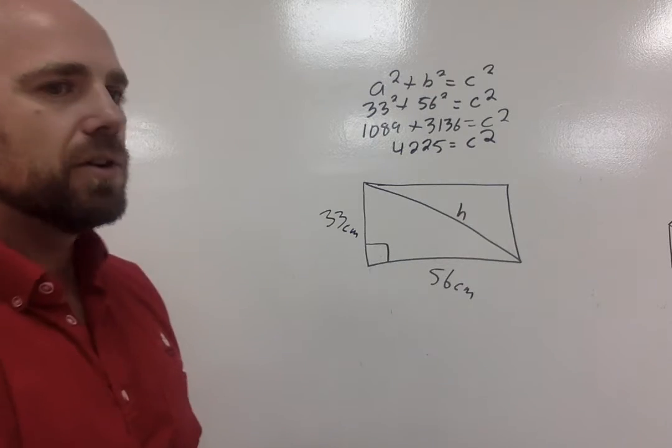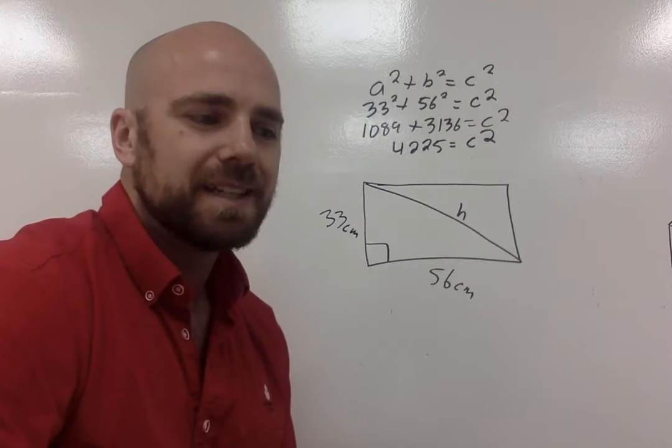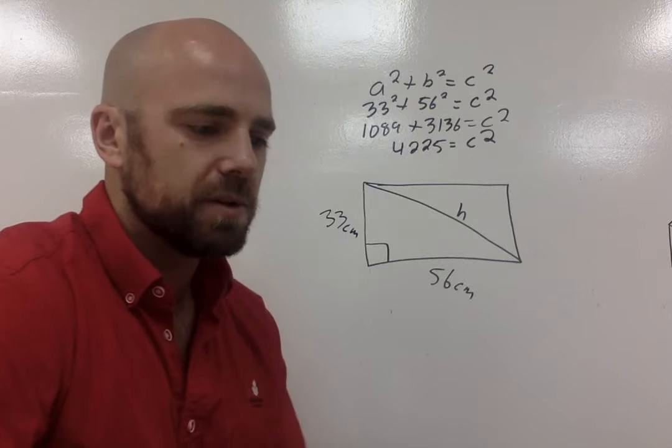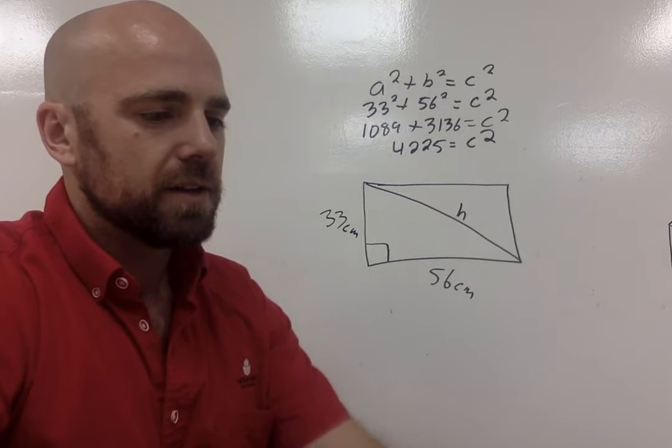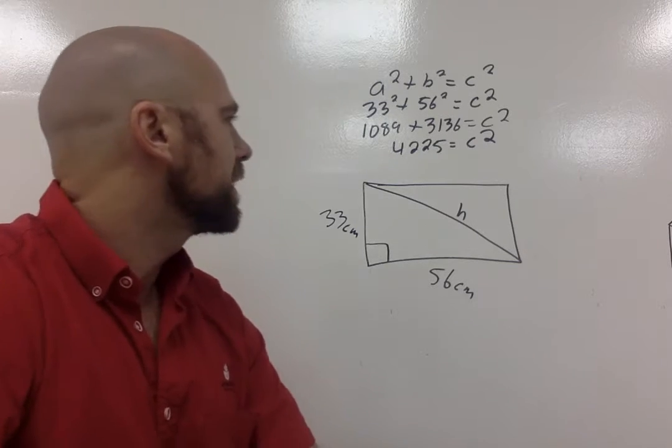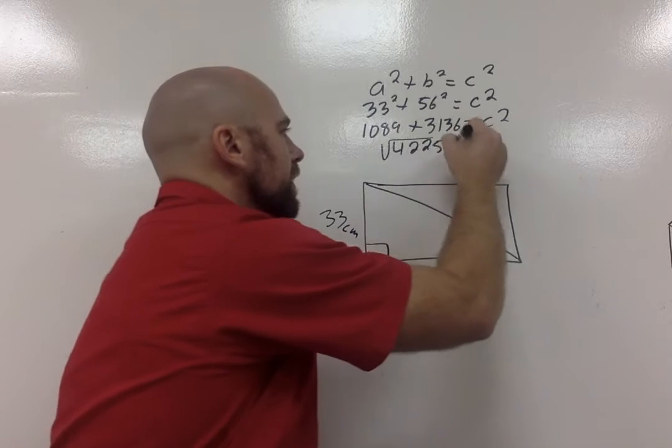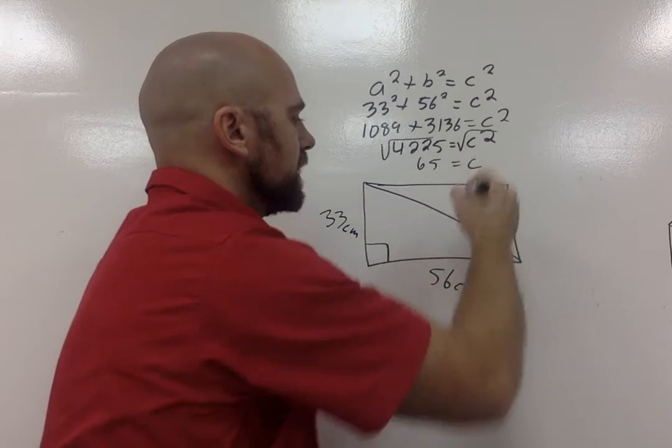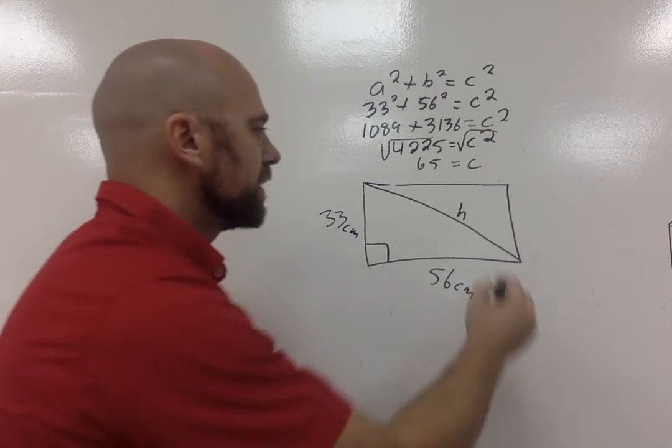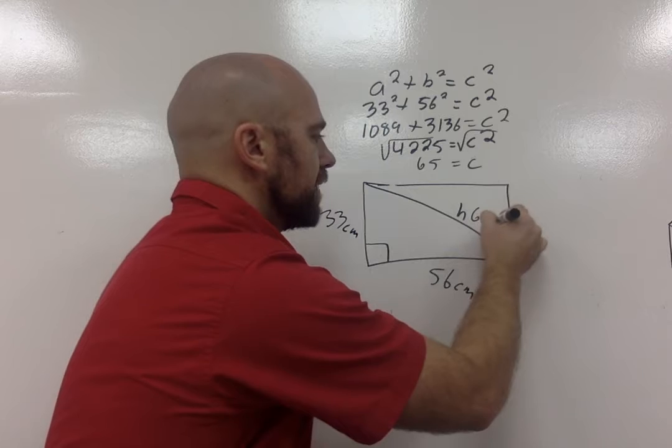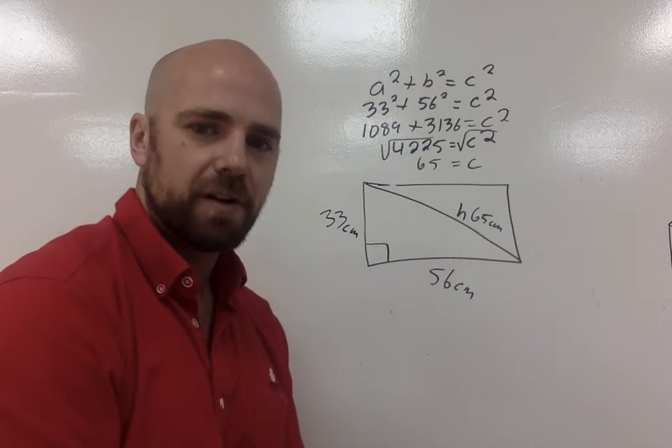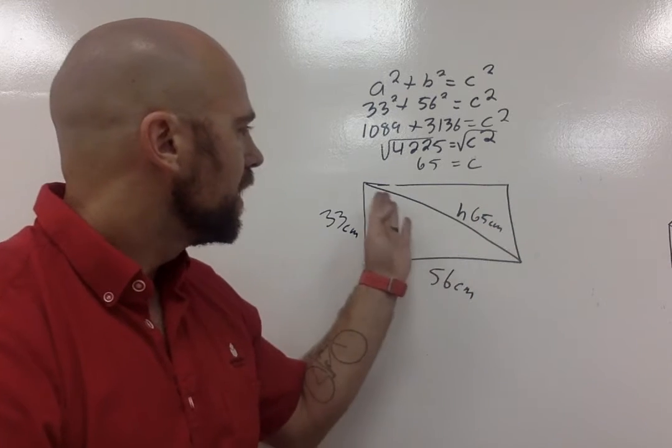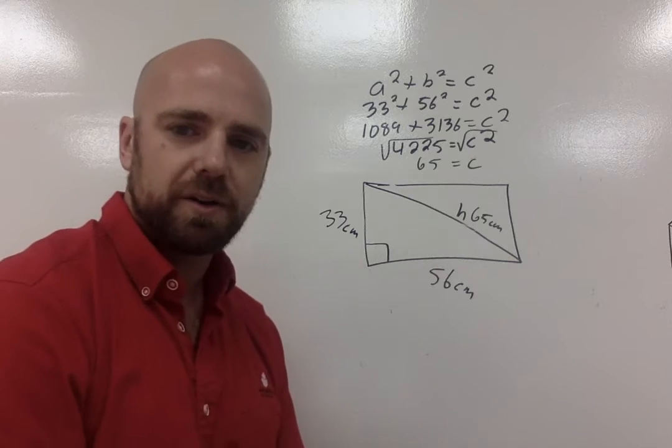Now when I'm looking at it, I know that 42 isn't one of my perfect squares, but that doesn't mean that it's not possible. So let's square root it, and I end up getting a wonderful whole number, which is 65 equals C. So that tells me that my length from here to here is 65 centimeters. Alright, so that's example number one, where we don't have the hypotenuse.